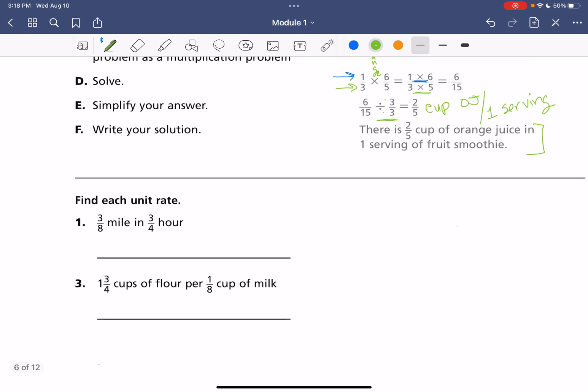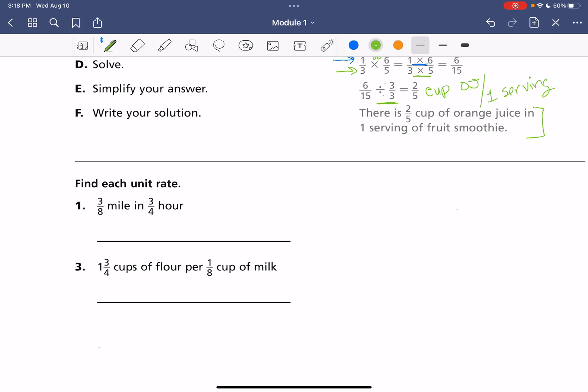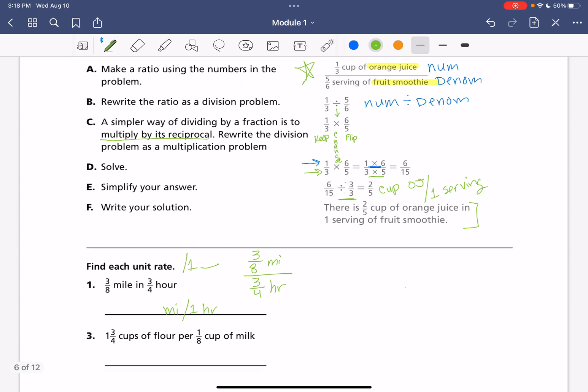So let's try this without the steps next to it. So we want to find unit rate. Again, that's that per 1, whatever your unit is. We have 3 eighths of a mile and 3 fourths hour. So 3 eighths of a mile per 3 fourths hour. And eventually we'll get to that miles per 1 hour or miles per hour. But we do need to, let's kind of see what we did up here and connect to what we have in our example up here. So we have our numerator and our denominator. So I'm going to rewrite this down here to be 3 eighths divided by 3 fourths.